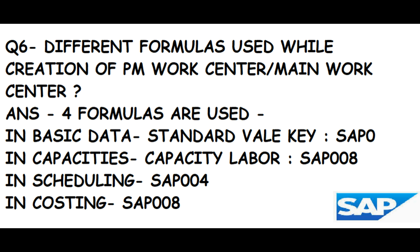The seventh question is: what are the different formulas used while creating a PM Work Center or Main Work Center? Four formulas are used. In the Basic Data tab, use Standard Value Key SAP0. In the Capacity tab, use Capacity Labor SAP008. In the Scheduling tab, use SAP004. In the Costing tab, use SAP008. These are standard formulas you can state directly when asked by the interviewer.